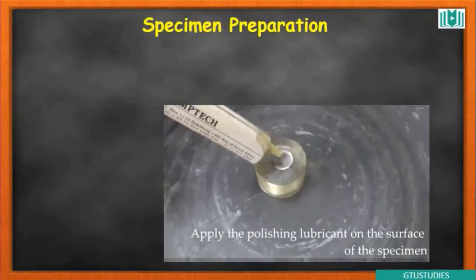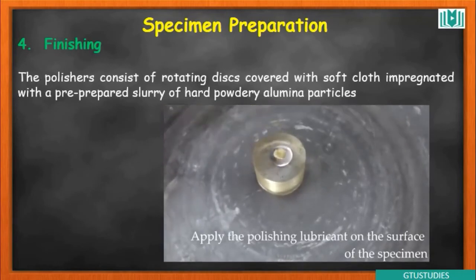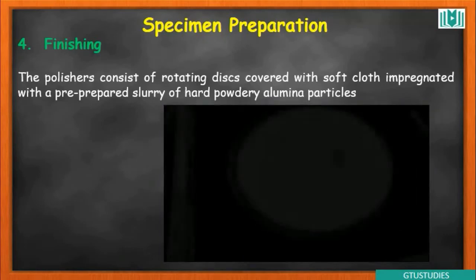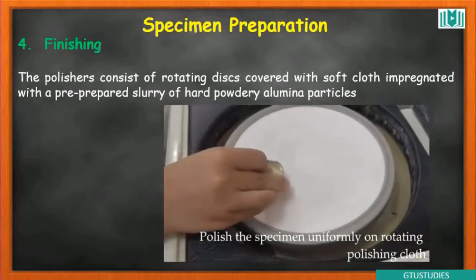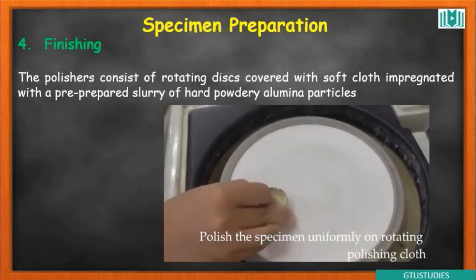The fourth step is polishing, which is the finishing step. This also uses a rotating disc, but it is covered with a soft cloth instead of silicon carbide paper. The polishing process finishes the surface to a smooth, reflective finish.